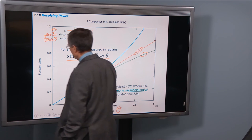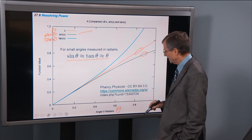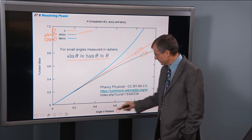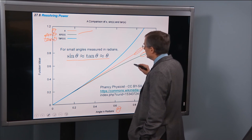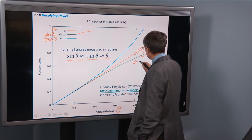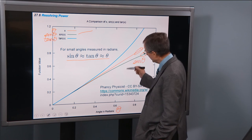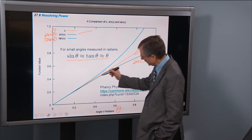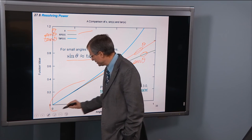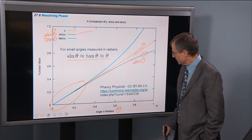The x-axis is actually theta. And so as you can see, sine of theta, this green curve, and theta here, they look very similar for very small angles, measured in radians.